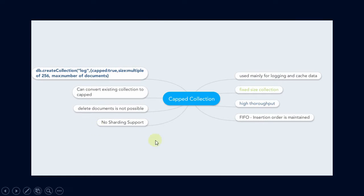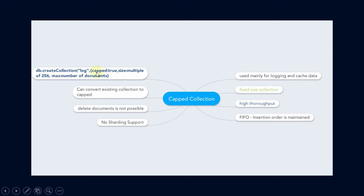Capped collections are fixed-size collections. While creating the collection you will specify the size, and note that there is an optional parameter where you can specify the maximum number of documents present in that collection. This is the syntax for creating a capped collection — similar to a regular collection, with three differences: you need to specify capped as true, specify the size, and optionally the maximum number of documents.